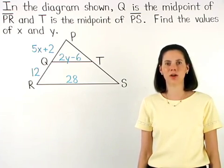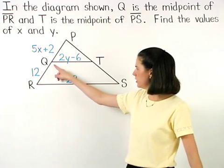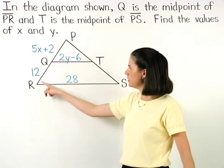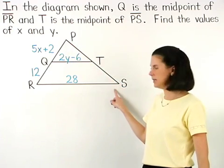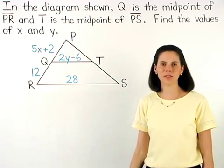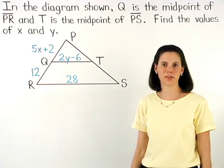In this example, we're given that Q is the midpoint of segment PR, and that T is the midpoint of segment PS, and we're asked to find the values of X and Y.